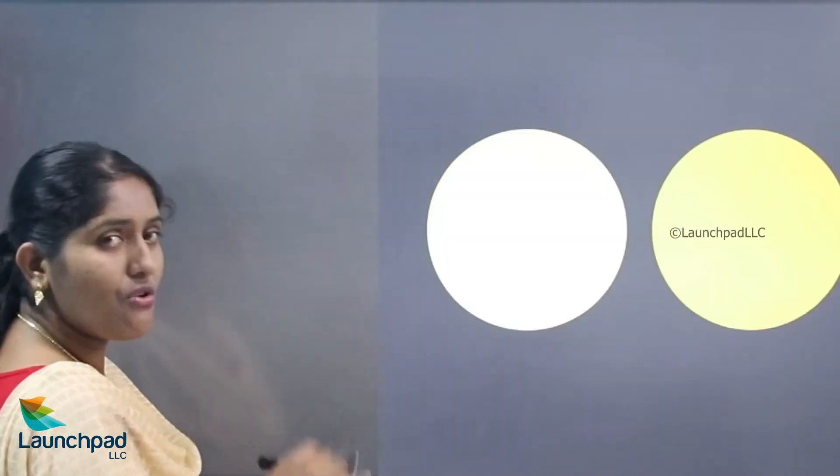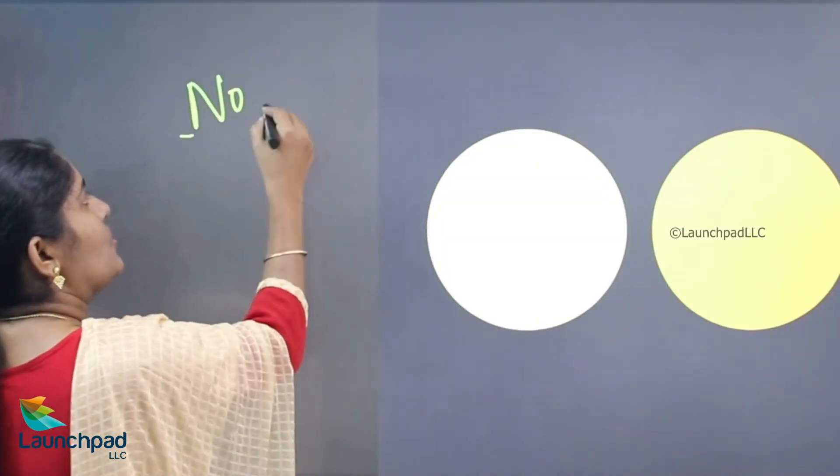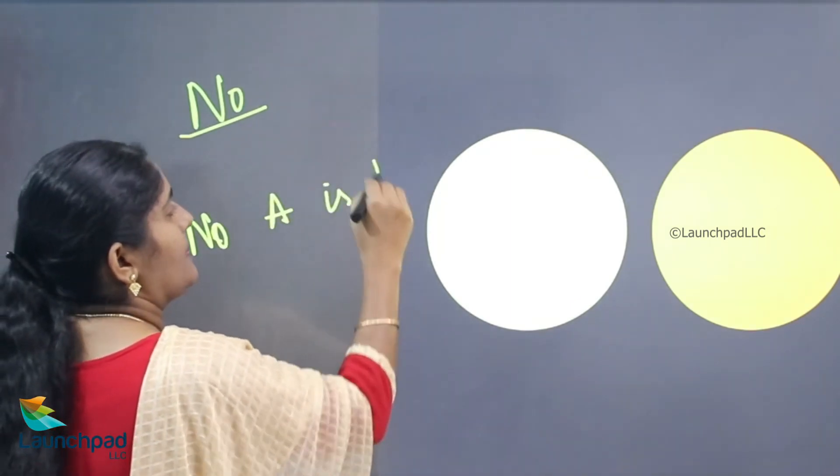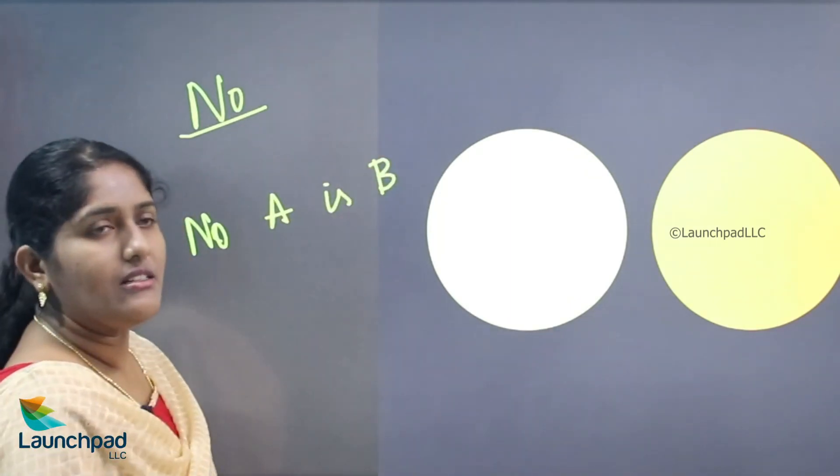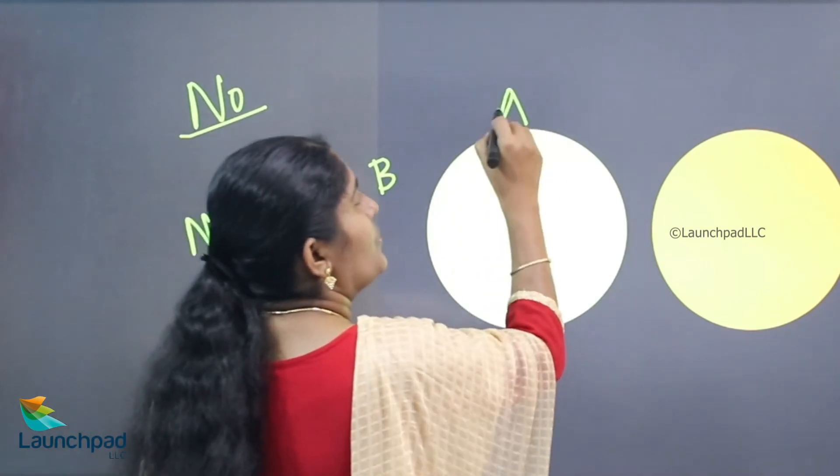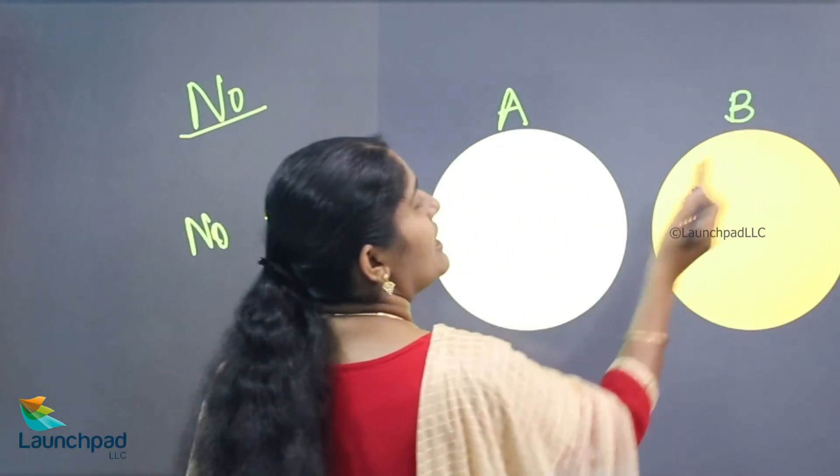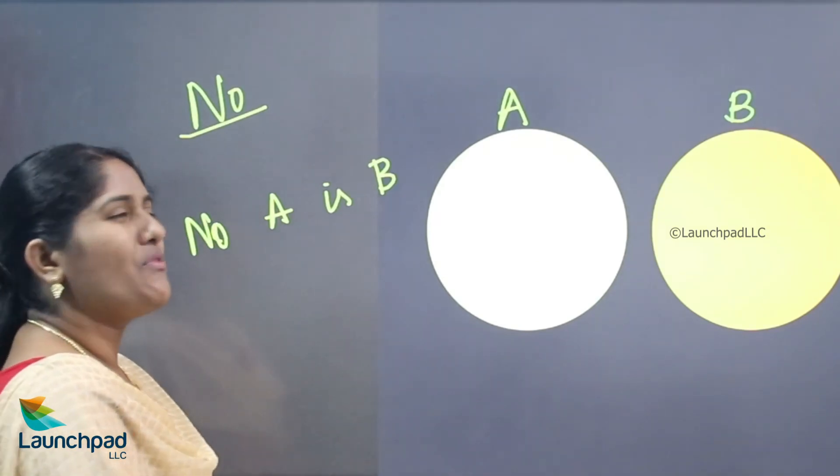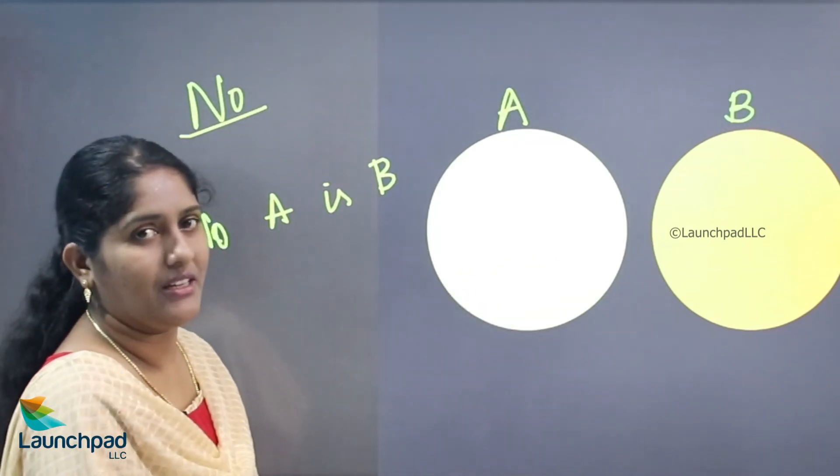Let's see the next type: no. Your next keyword is no. No A is B in the sense here, no A is B, there is no relationship between A and B. We want to draw the diagram and diagram separately.